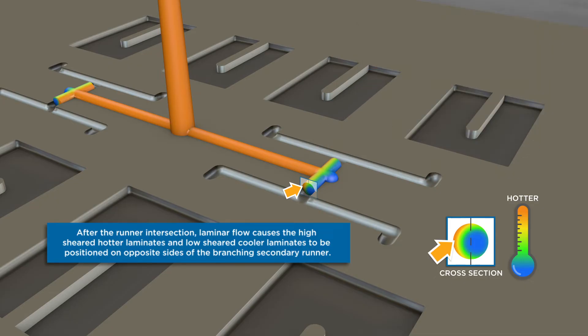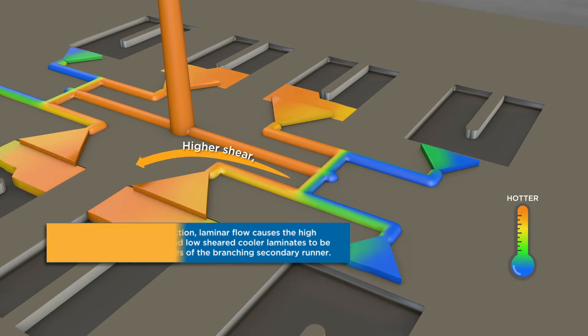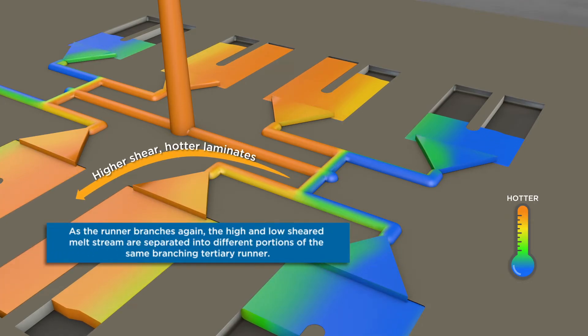So now after the runner intersection you have higher sheared hotter material laminates on one side and lower sheared cooler laminates on the other side of that secondary runner branch.